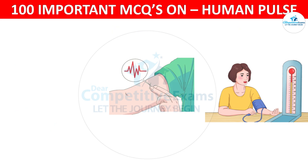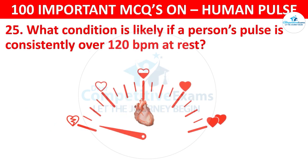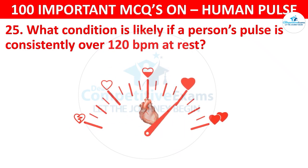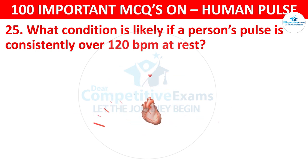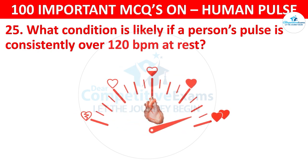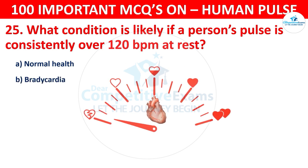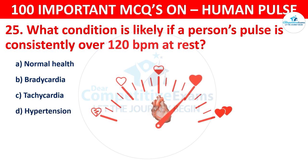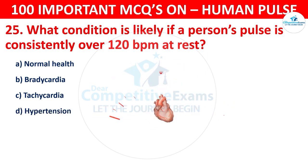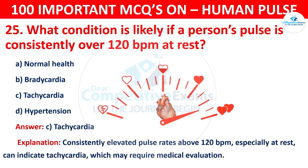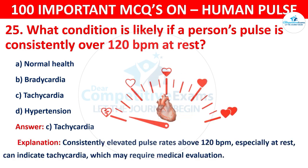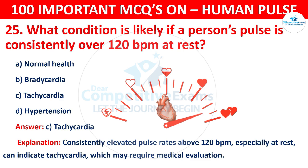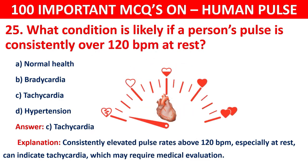Question number 25: What condition is likely if a person's pulse is consistently over 120 beats per minute at rest? Your options are: Normal health, Bradycardia, Tachycardia, or Hypertension. The correct answer is C, that is tachycardia. A consistently elevated pulse rate above 120 beats per minute, especially at rest, can indicate tachycardia, which may require medical evaluation.